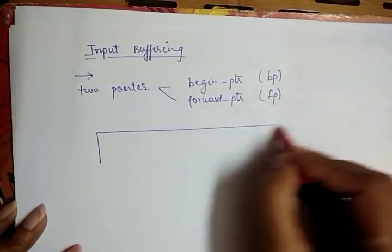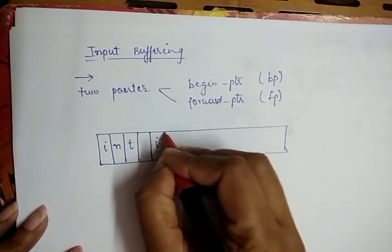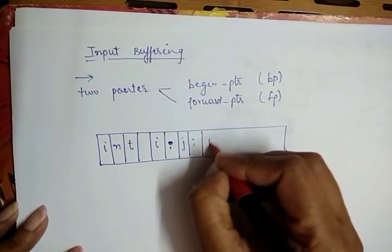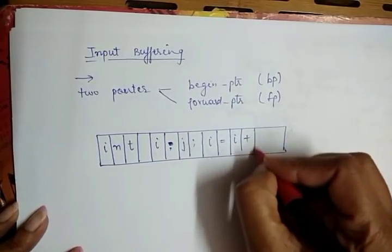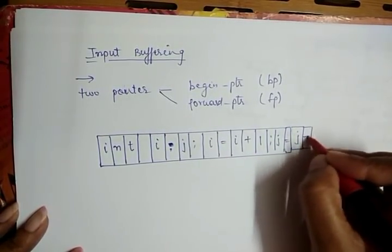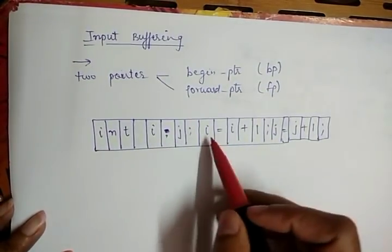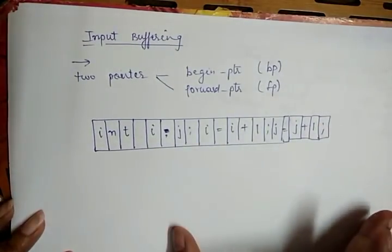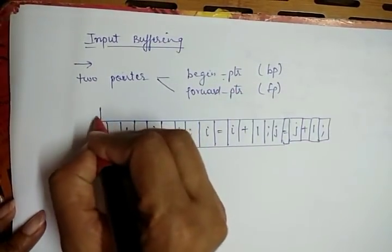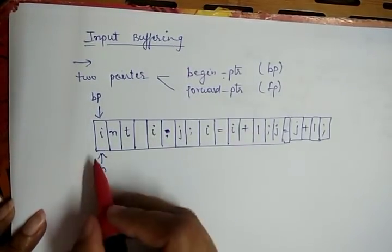For example, if this is an input buffer and we have source code like: int i, j; i = i + 1; j = j + 1; we place this source code in the input buffer. Initially, both the begin pointer and the forward pointer point to the first character of the input string.